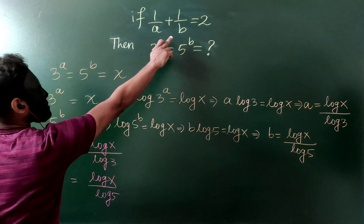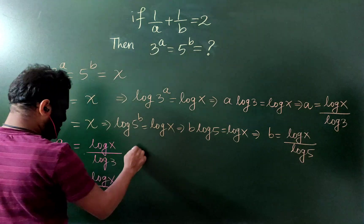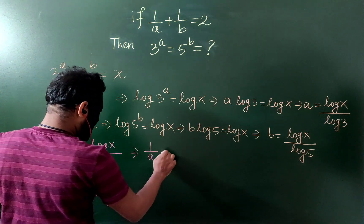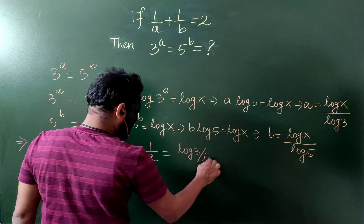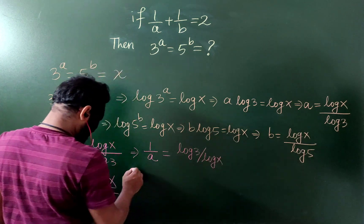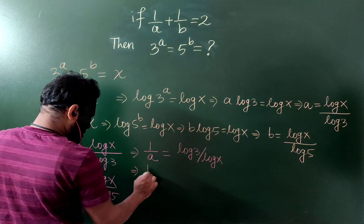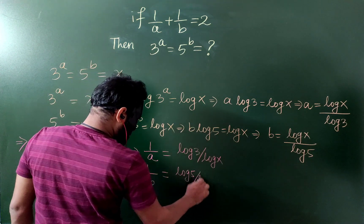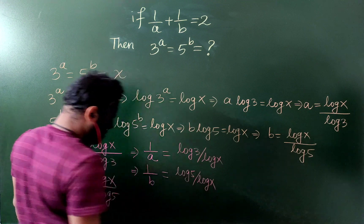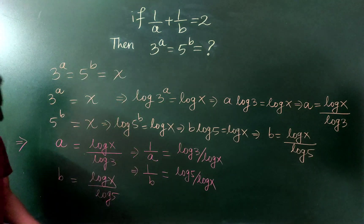Now, because we know they are reciprocal sum, let's take reciprocal of these. 1 by a becomes log 3 by log x, and 1 by b becomes log 5 by log x. Now let's add both,